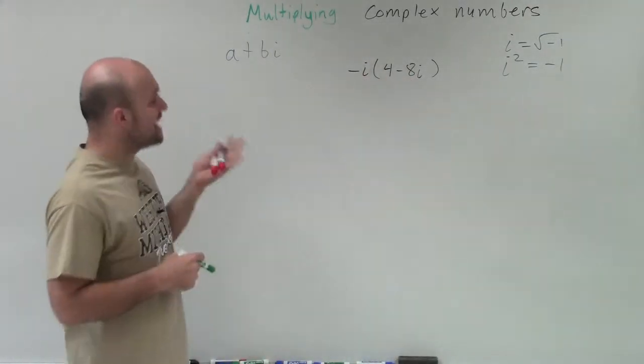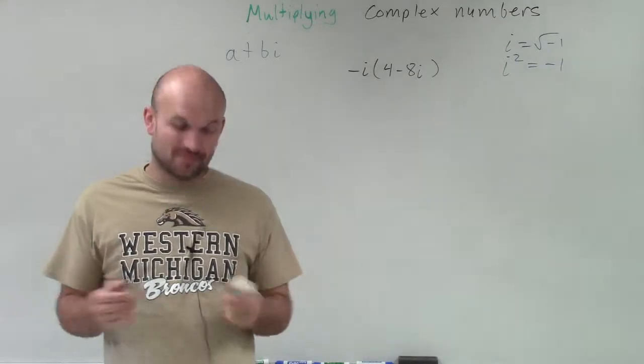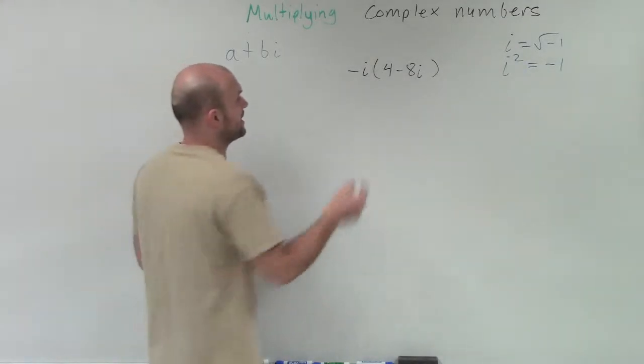We have negative i times 4 plus 8i. So here, what we're going to do is make sure we apply our distributive property.